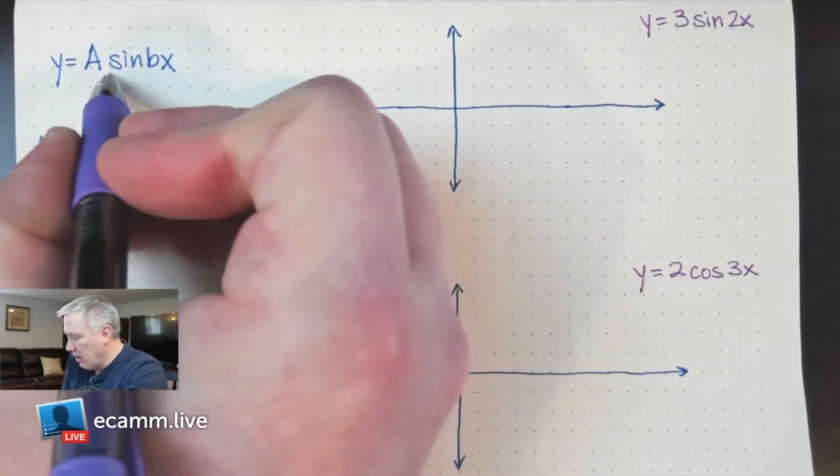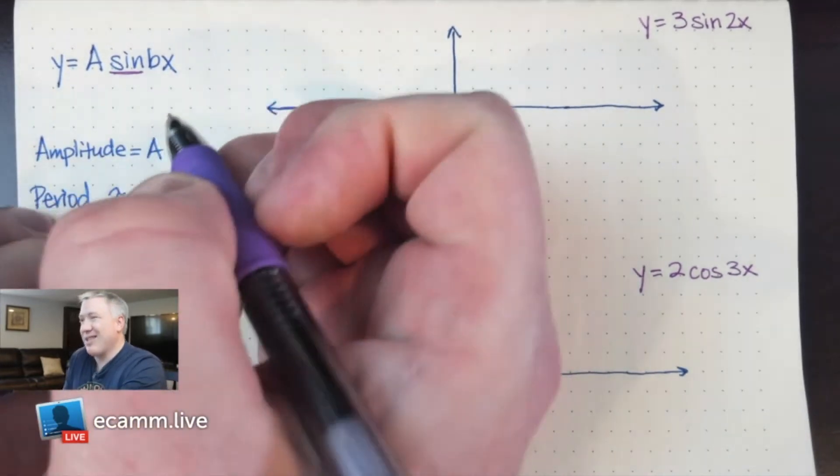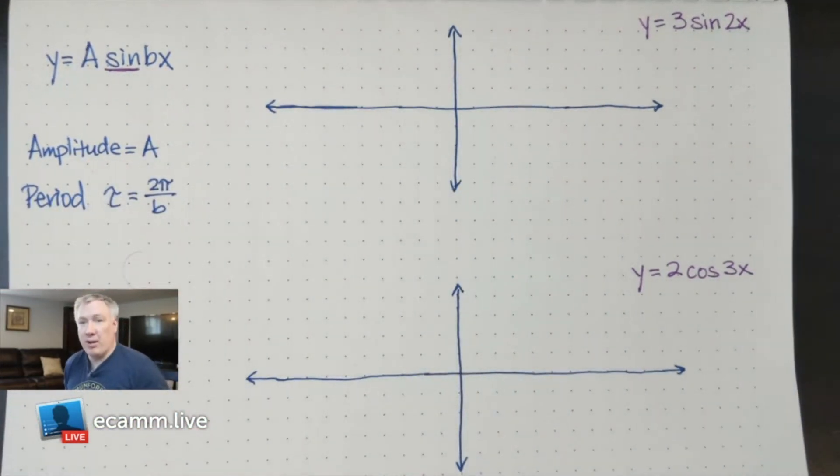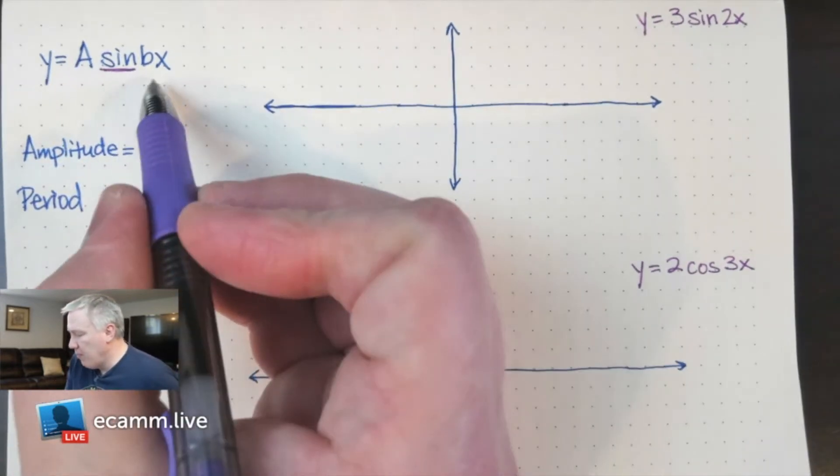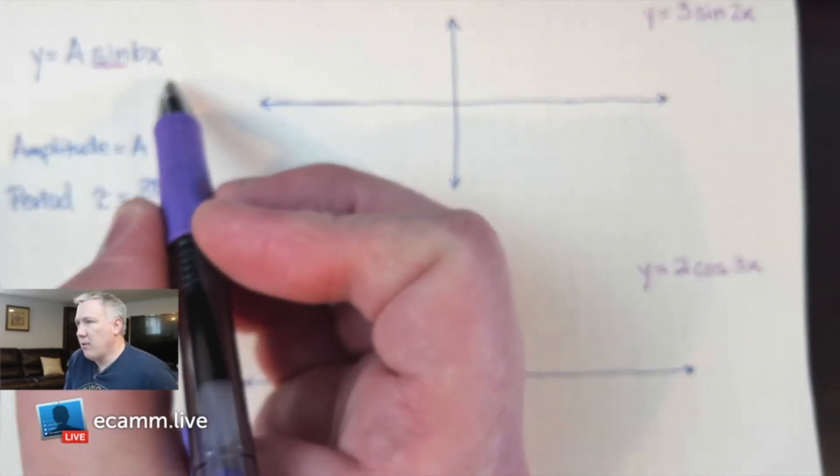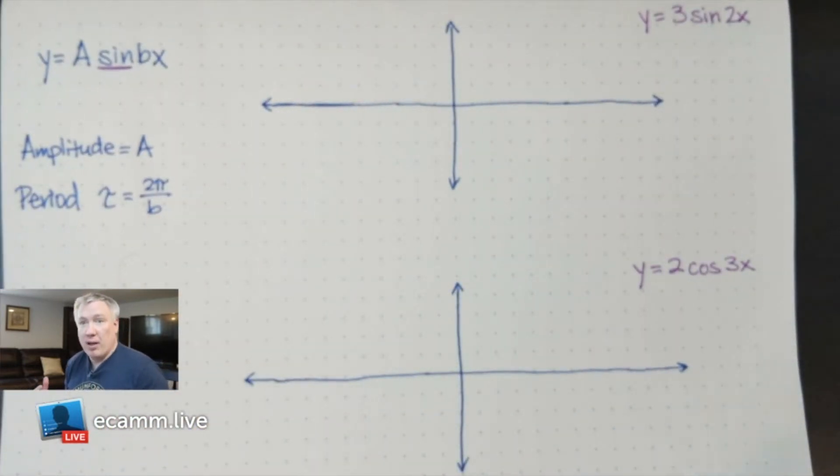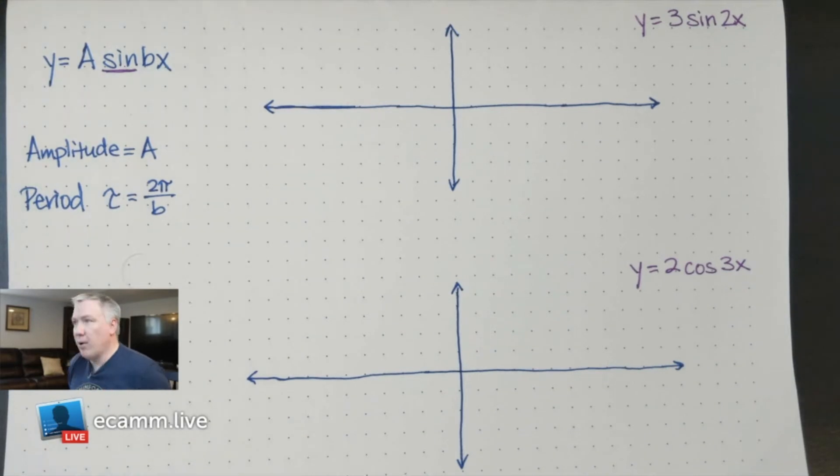I want you to see that this part of the formula right here, this part's sine. As we move through this, it can be replaced with cosine, tangent, cotangent, secant, cosecant, and we'll be using the same sort of process. The a and the b will have similar meanings in both cases. x and y are variables - x is the input, the independent variable, y is the dependent, the output.